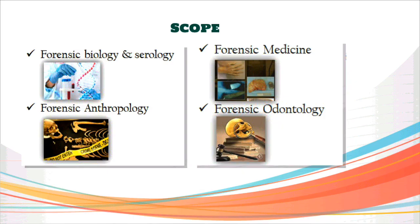Next, coming to the scope. Forensic science has various specialities, but here we'll discuss the major ones. Firstly, forensic biology, which includes the study of plants and animal materials encountered at the crime scene. Serology is the study of serum and other body fluids that we come across at the crime scene.